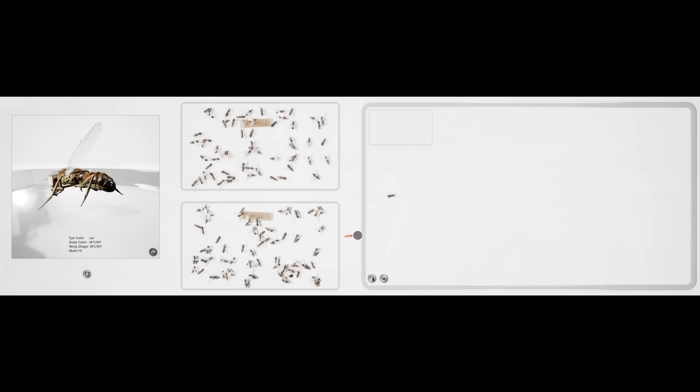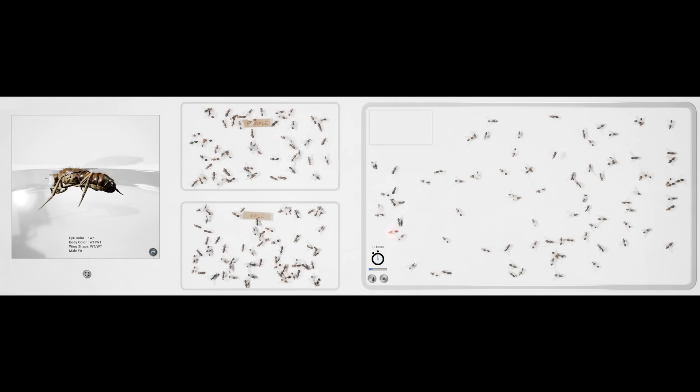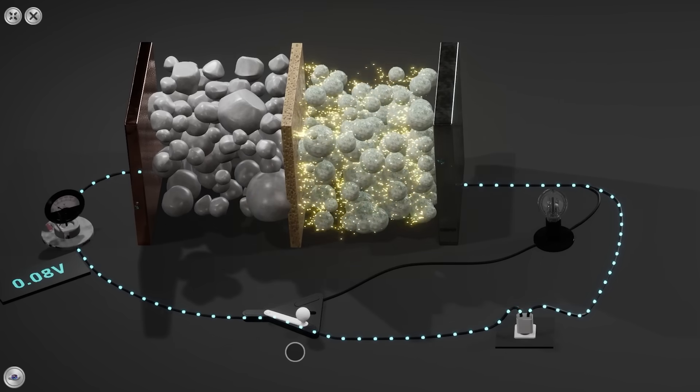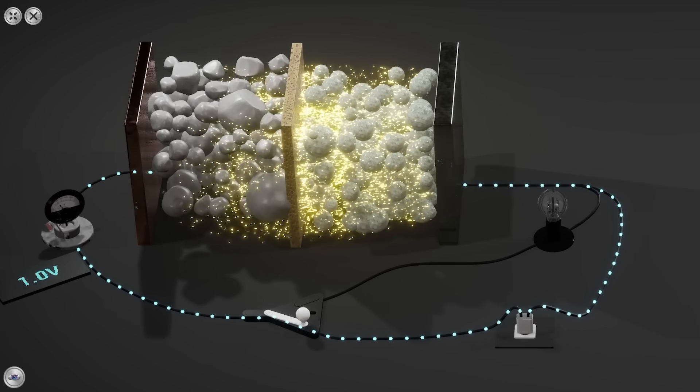They can breed fruit flies to study the inheritance of various genetic traits, and even explore the chemistry of lithium-ion batteries at the atomic level.